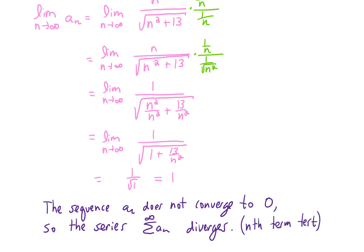A quick note, if the sequence, a sub n, does converge to zero, that does not guarantee that our series converges. That's a pretty common mistake.